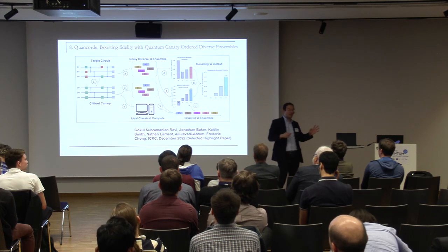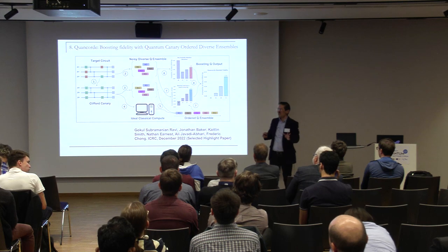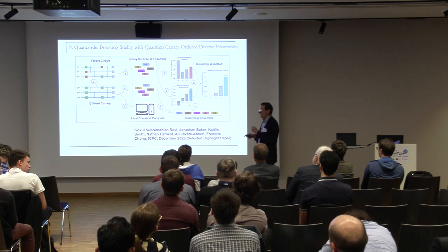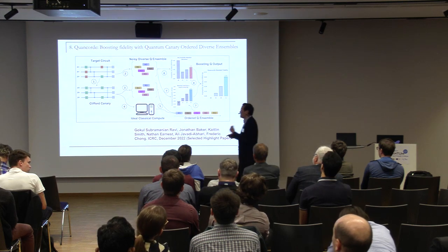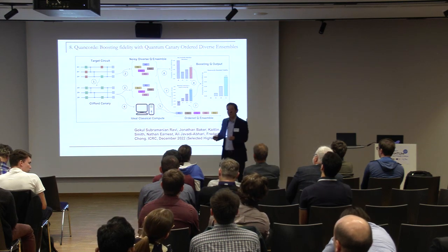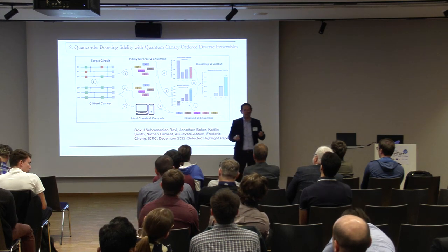The trick is knowing which machine is best at which output. He approximates the circuit with what we call the Clifford canary — basically map it to the closest Clifford circuit, simulate that classically with no noise on a supercomputer to find the ideal answer. Once we know the ideal distribution, run it on many machines to find which machine is best at which output, then run the real circuit on the same machines, and assume consistent behavior — giving a much better boosted fidelity. This was surprising to me; it works great.